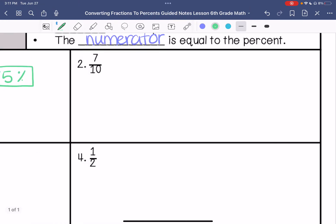Number two, we have seven-tenths. What times 10 is 100? 10 times 10. So we're going to multiply the top by 10 as well. So my answer is 70%.